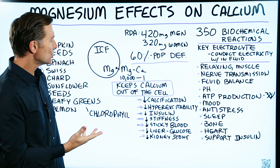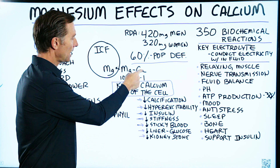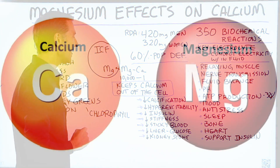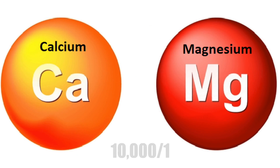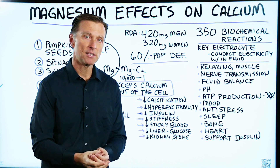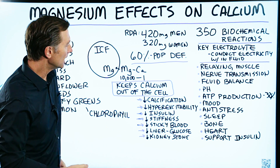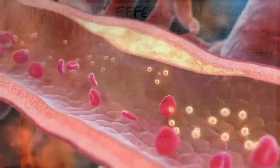In fact, the ratio of magnesium to calcium inside the cell is 10,000 to one. When there's low magnesium and the calcium gets out of control, you start getting calcification.